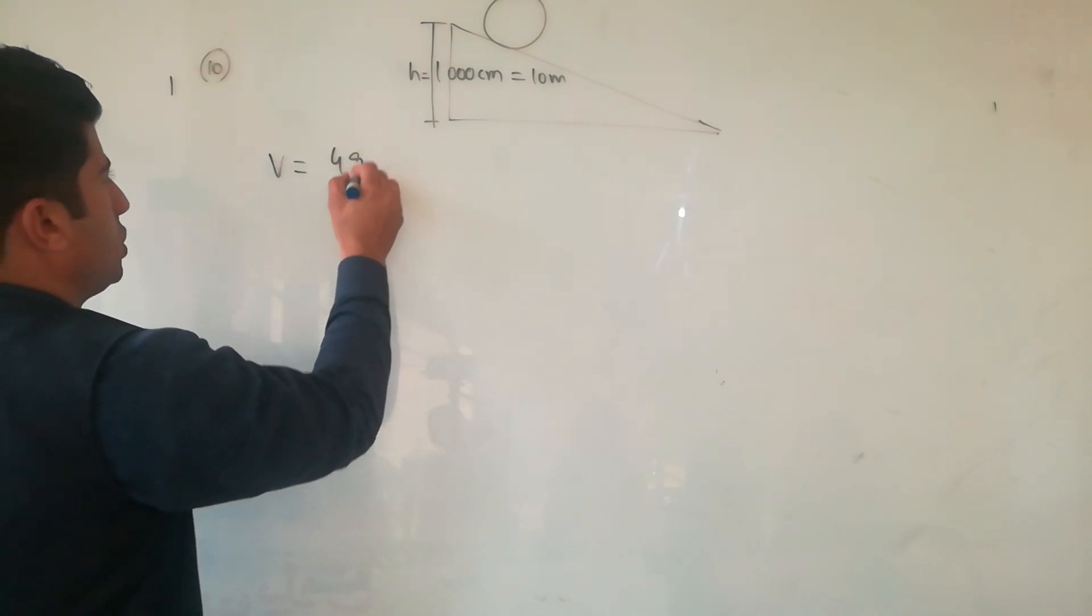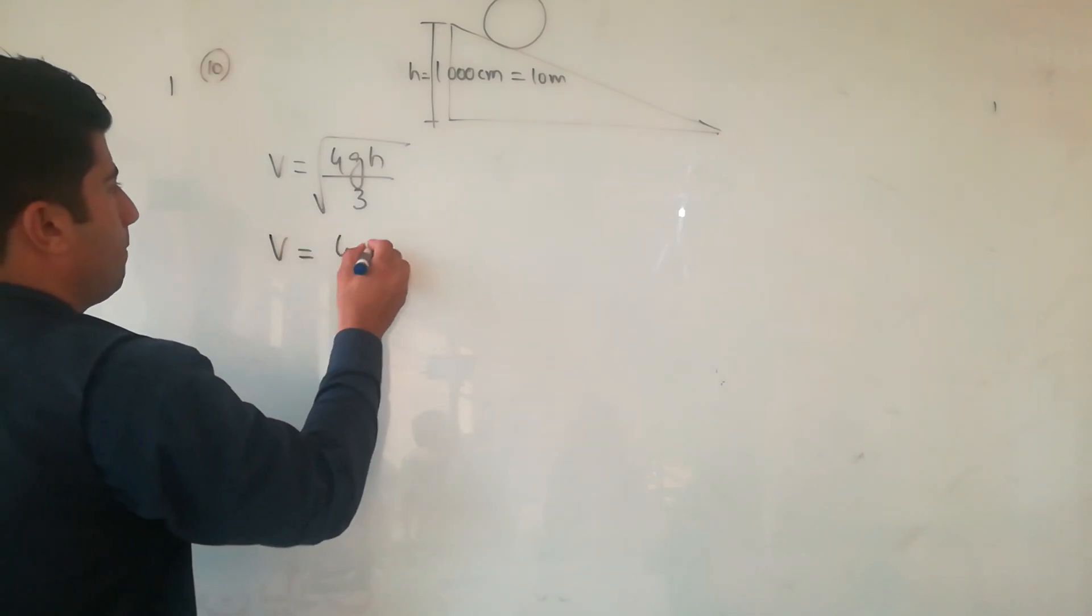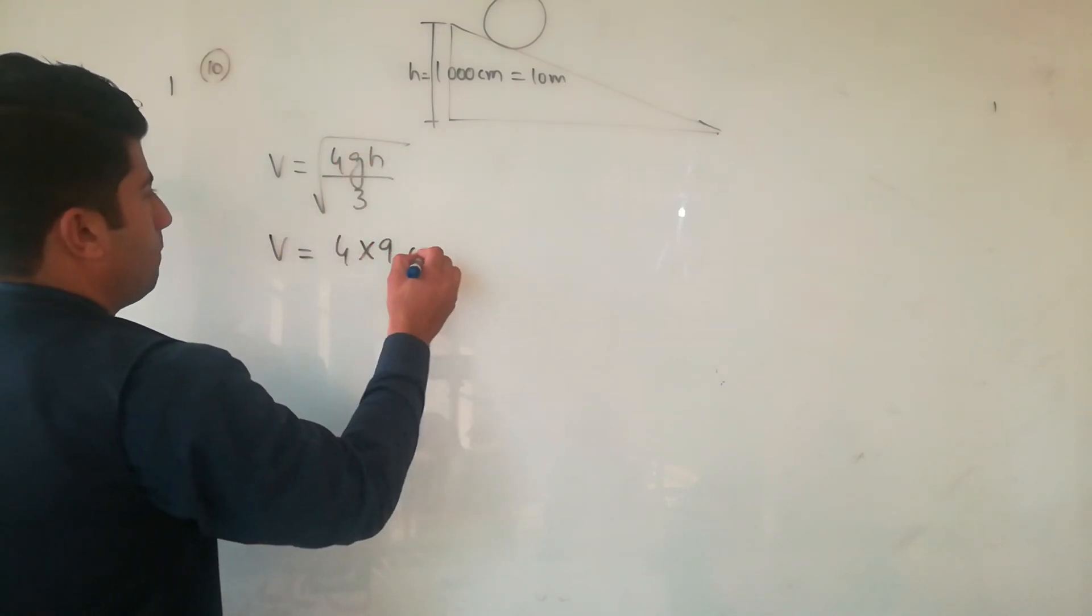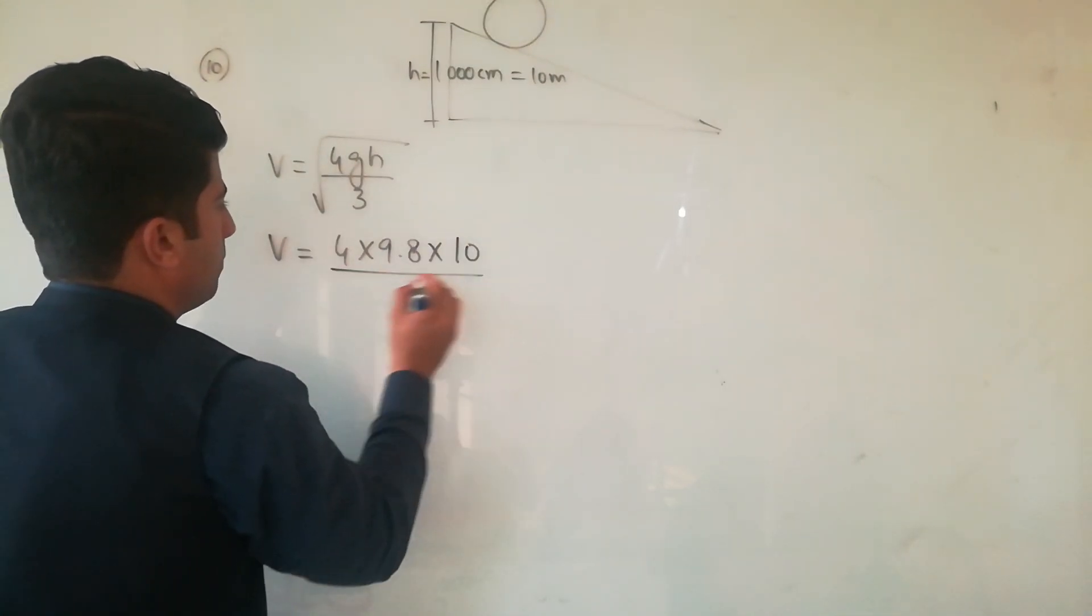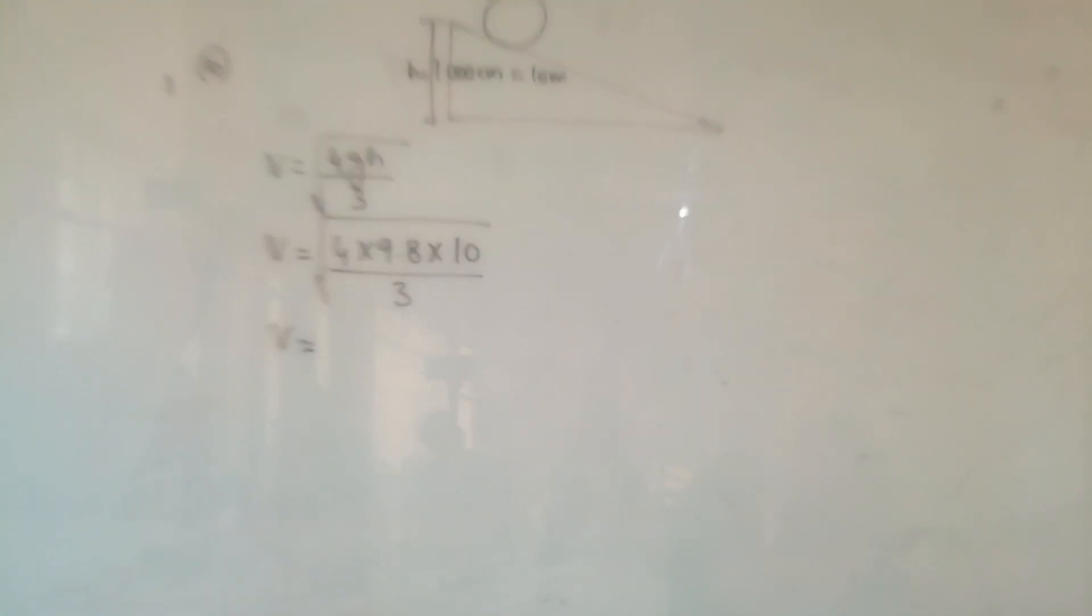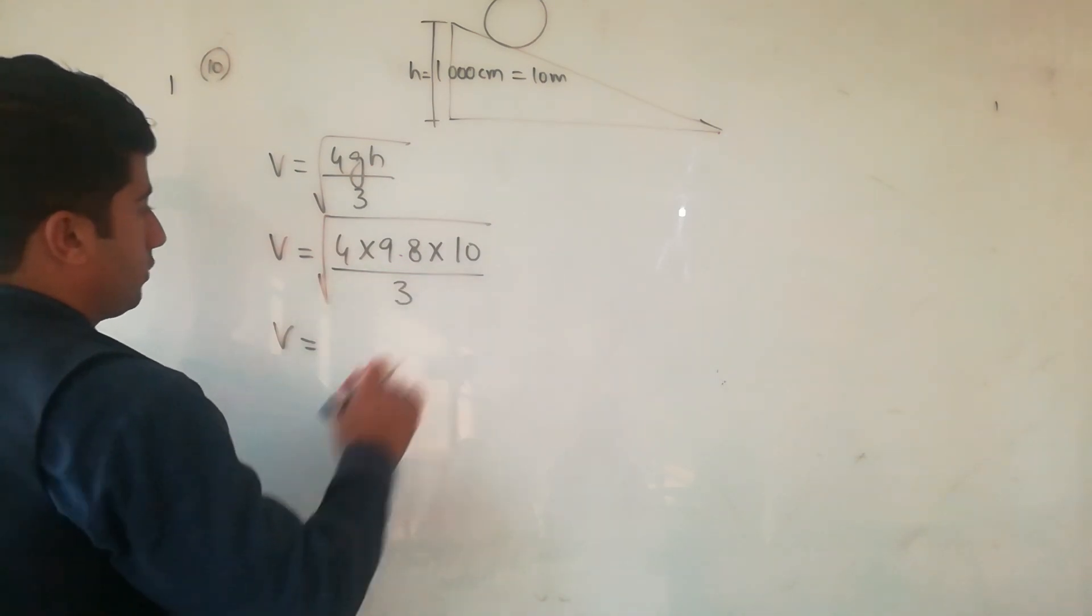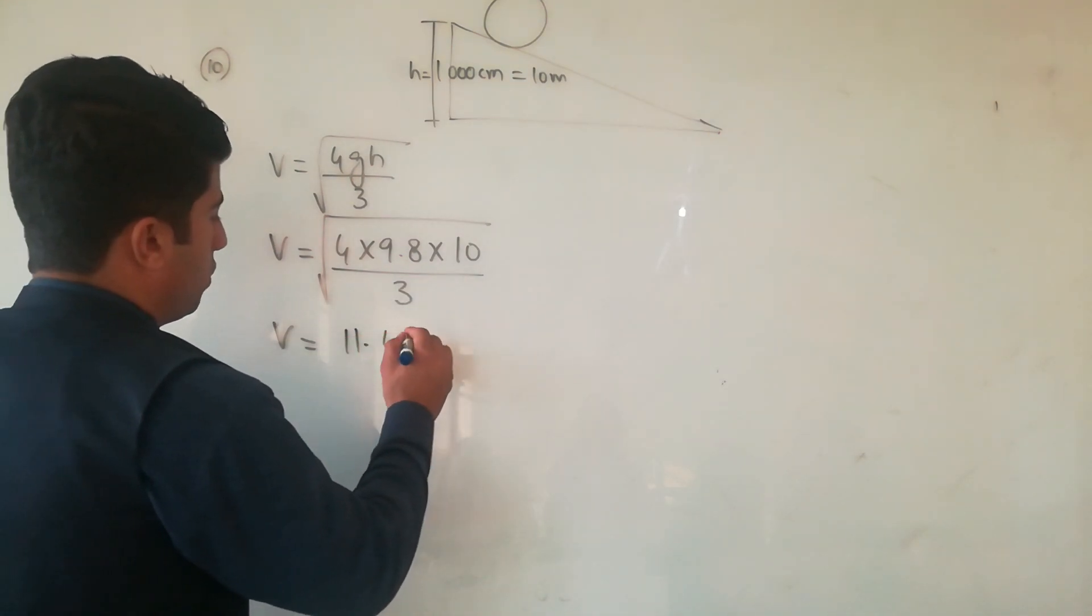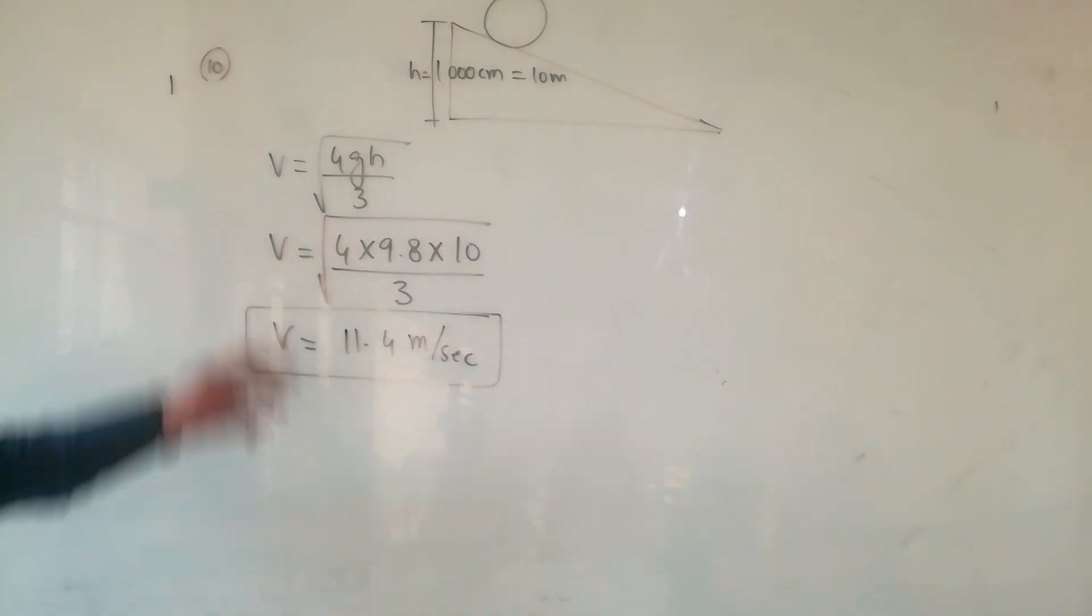The velocity at the bottom of the hill: v equals square root of 4gh divided by 3. V equals square root of 4 times g, which is 9.8, times h, which is 10 meter, divided by 3. If you calculate it, you will get 11.4 meter per second. So this will be the speed of the disc at the bottom of the hill.